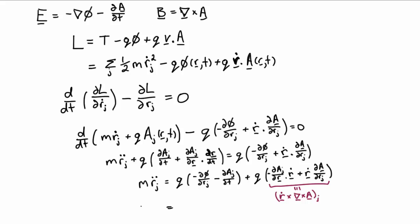So in fact what we have component by component is that the mass times acceleration is precisely the electric field plus v cross the magnetic field. In other words, we've recovered the Lorentz force law from this Lagrangian.